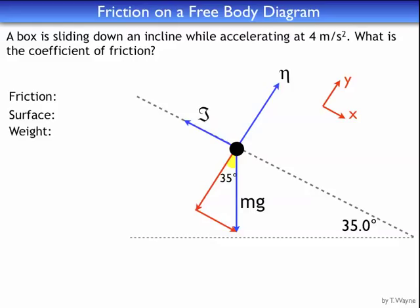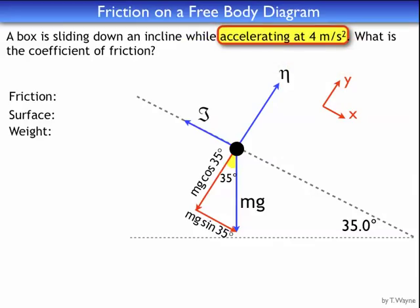I need to break up the components of mg so they're parallel and perpendicular to the incline. mg is the hypotenuse, and I have two pieces of the triangle that add up to give me mg. The adjacent side is mg cosine 35, and the opposite side is mg sine 35. I'll ignore the original mg vector and work with these two components. Because it's accelerating down the incline, when I add up all the forces I get MA net — accelerating down the incline.